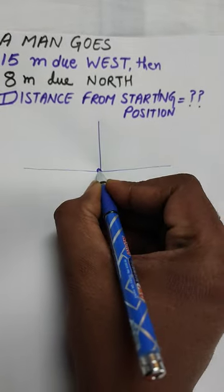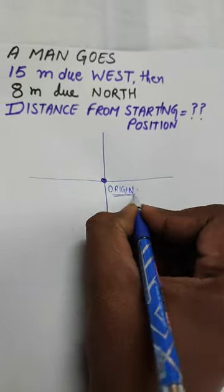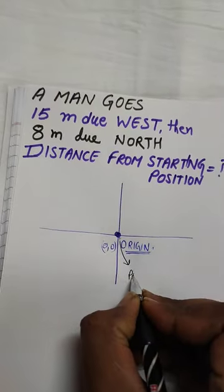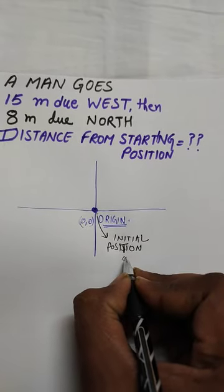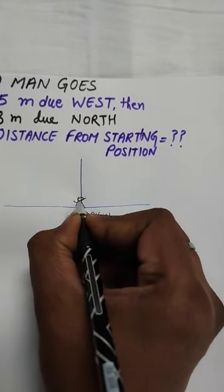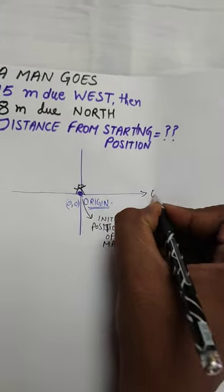For all such questions, always draw a number line where the origin is the initial position. Plus x is considered as east and minus x as west, plus y as north and negative y as south.